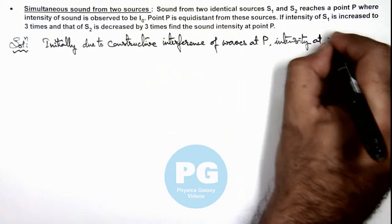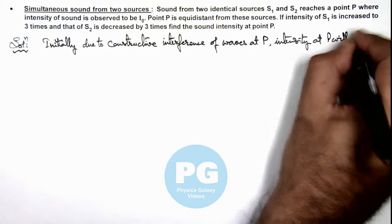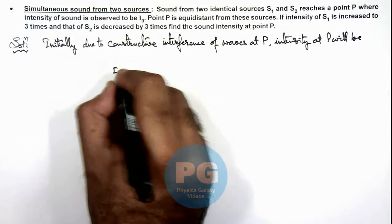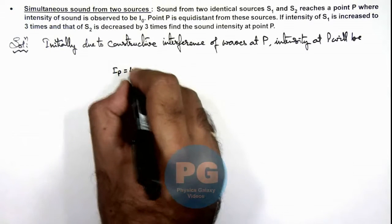Intensity at P will be, here we can write, intensity at point P will be equal to 4 times I₀.